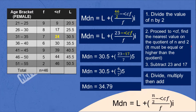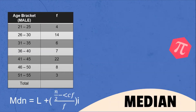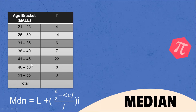Let's now proceed to the next example. Given the age bracket of male respondents: 4 males from 21–25, 14 from 26–30, 6 from 31–35, 7 from 36–40, 22 from 41–45, 8 from 46–50, and 3 from 51–55 years old.